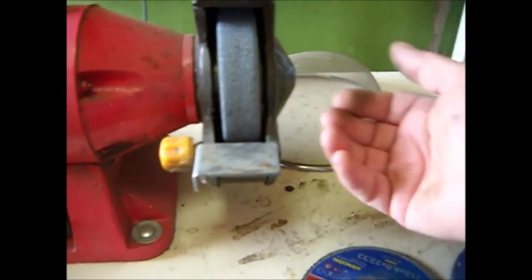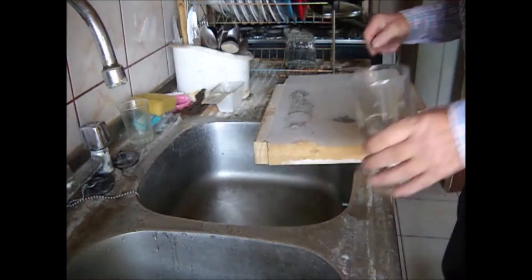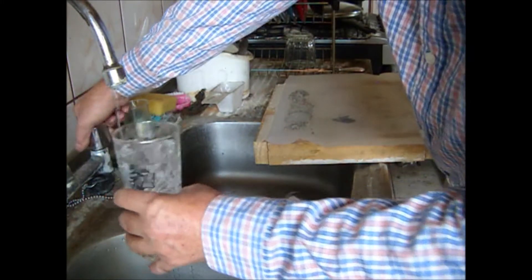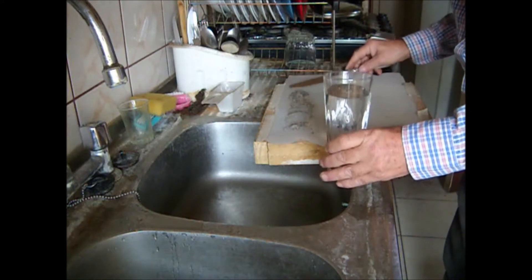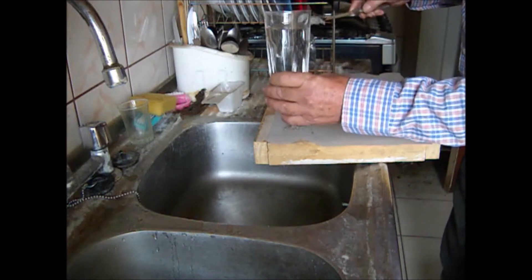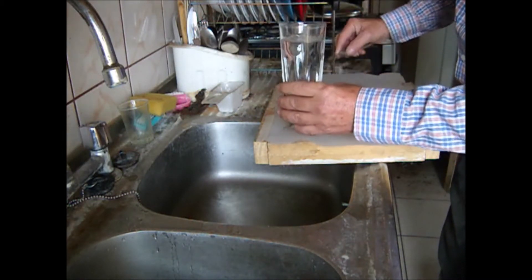But we can separate that from the filings using a magnet. To separate the iron filings from other materials like wood and so on, what we have to do is, in a glass of water, just throw it in a good amount.